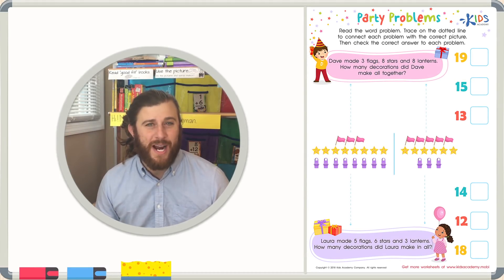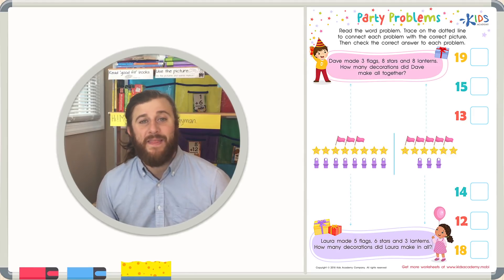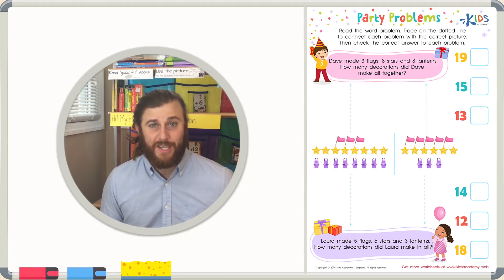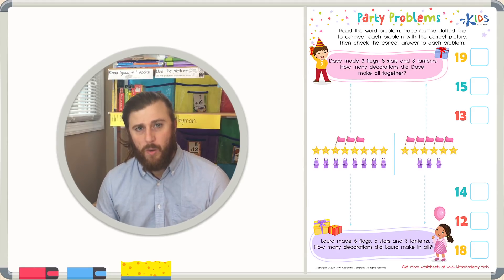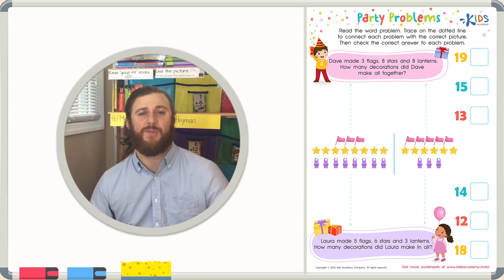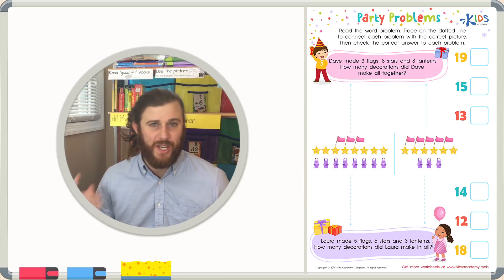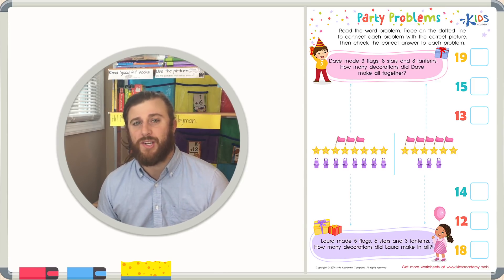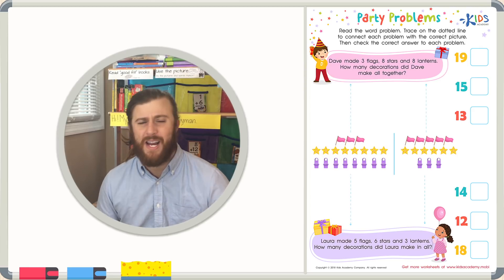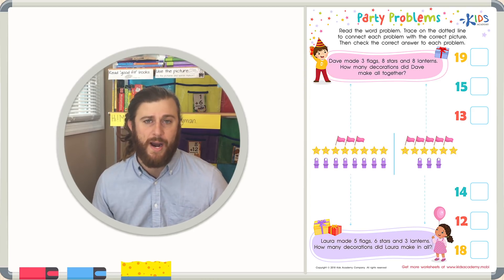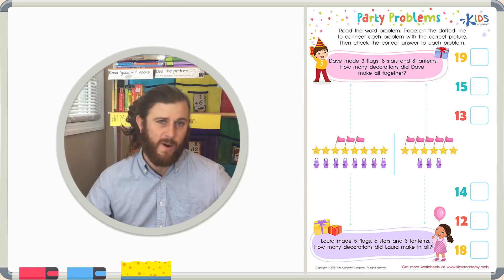Today we're going to be practicing with word problems. In this lesson, we're going to have to match a word problem to a picture to help us solve the problem. We're going to have to determine whether the word problem wants us to add or subtract, but we have those addition and subtraction keywords that will help signal us. Let's read the directions and get started, and I'll remind us of some of the great word problem skills that we've acquired over our previous lessons.